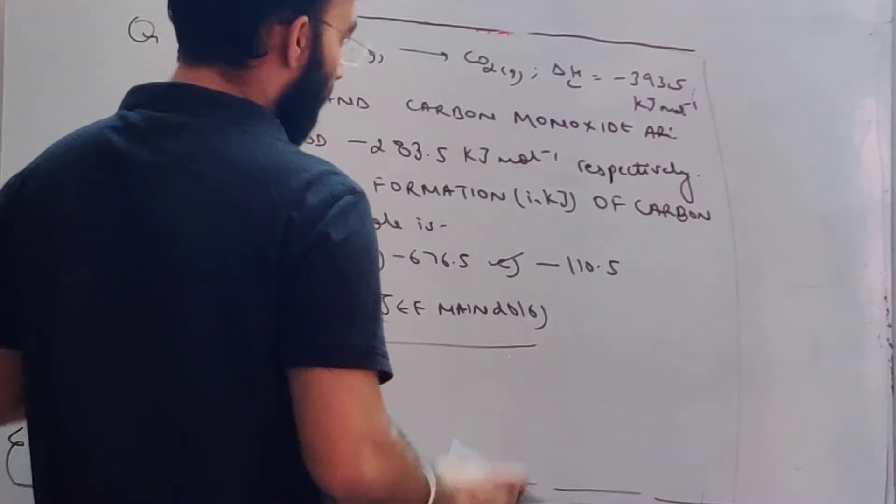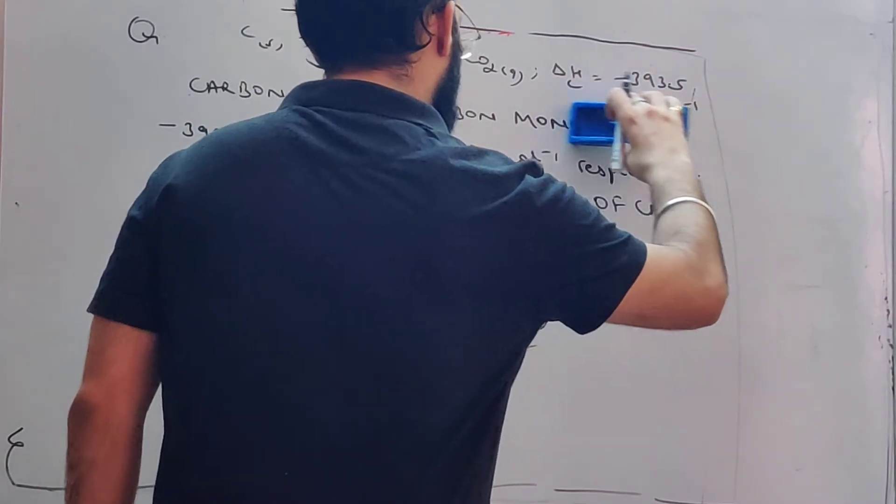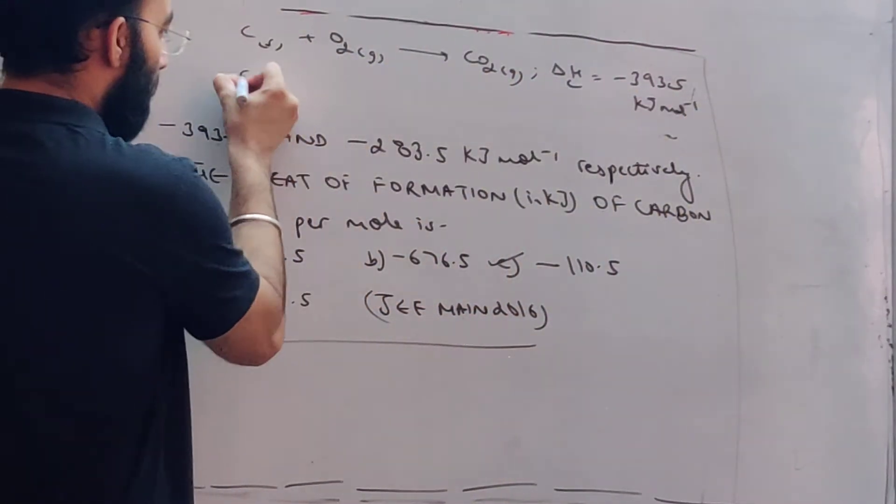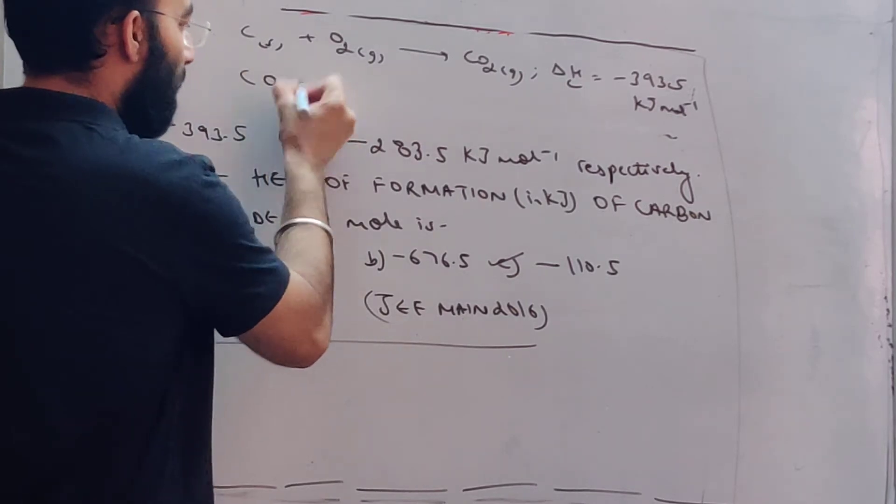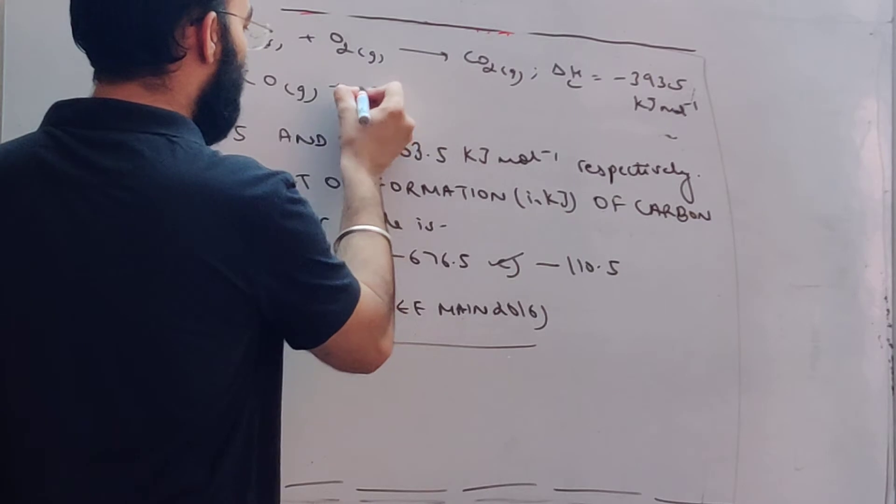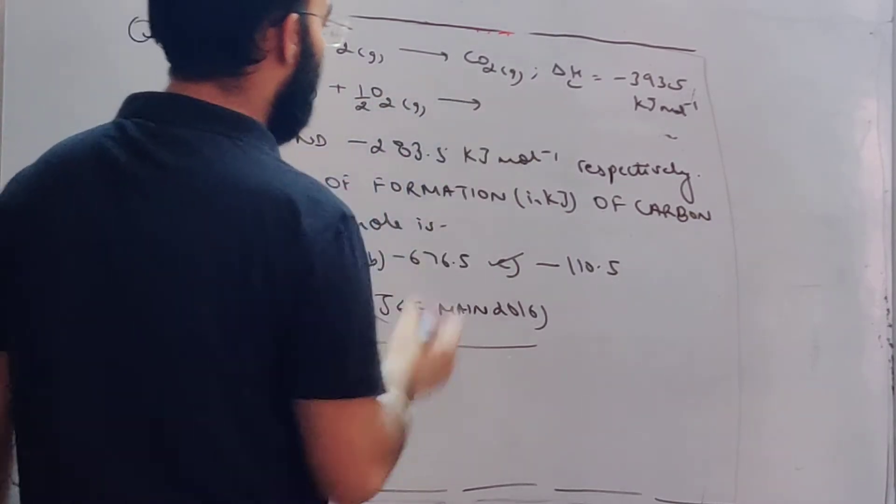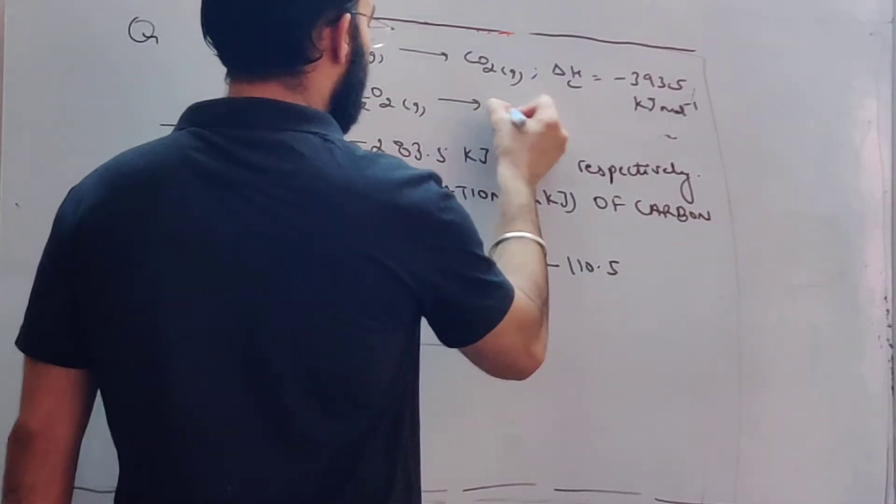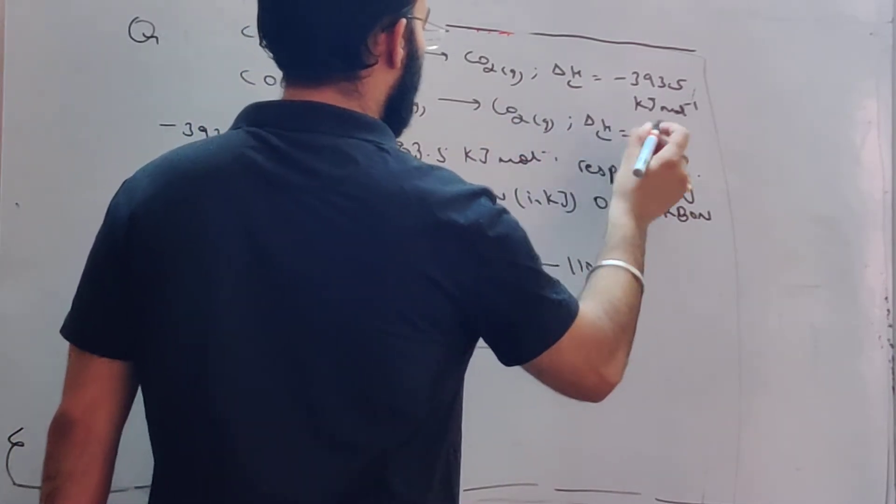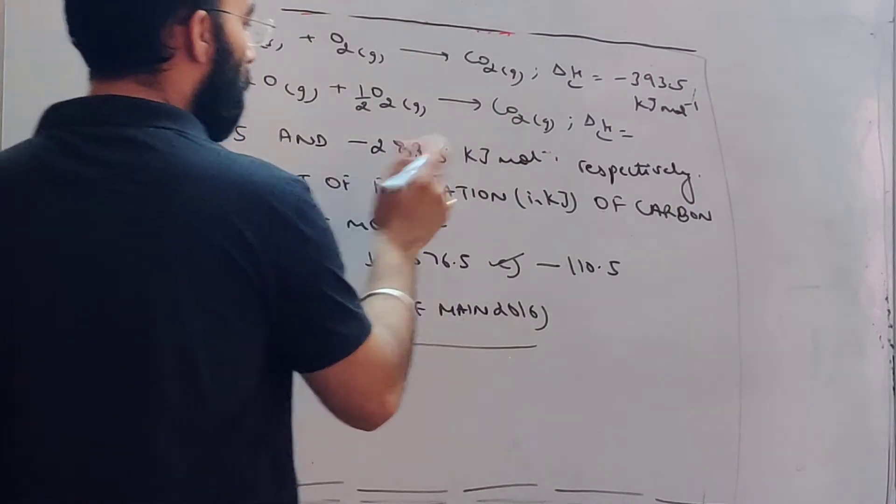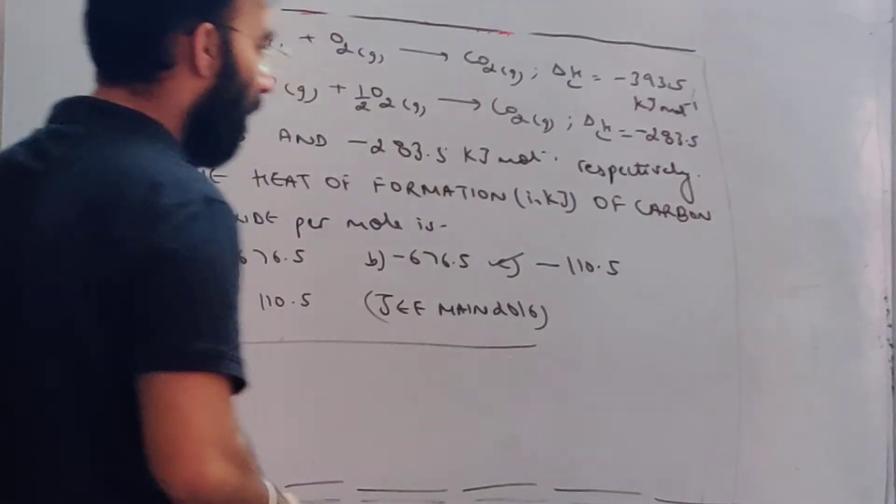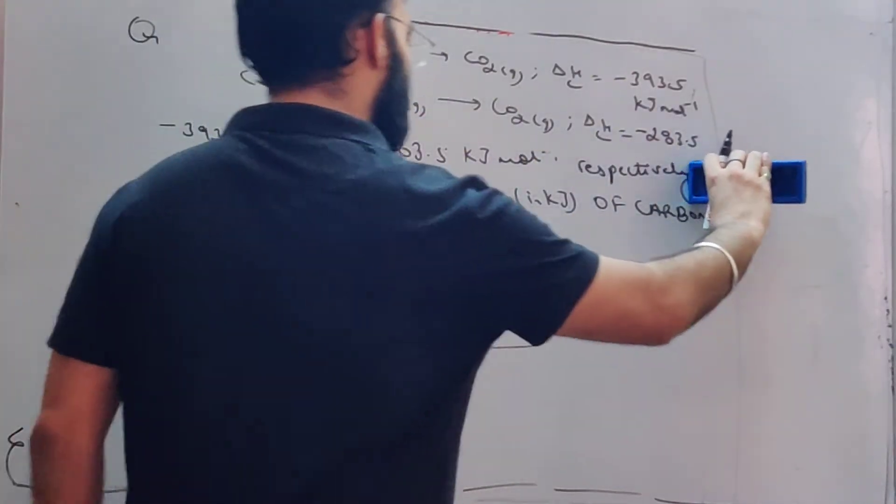And then, the heat of combustion given for carbon monoxide. Carbon monoxide in gaseous state - heat of combustion means it's to be fully combusted, fully oxidized. What will it make? Carbon dioxide will be made. This is the enthalpy change.